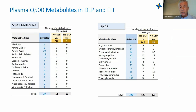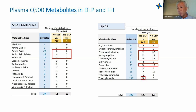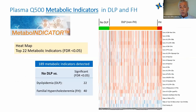Breaking these down by class: on the left side are small molecules, on the right are lipids. There are some amino acid changes, but the major findings were in acyl carnitines and phospholipids — particularly phosphatidylcholines, sphingomyelins, cholesterol esters, ceramides, and triacylglycerols. The FH group showed significant triglyceride effects, though small sample size meant they didn't reach statistical significance.